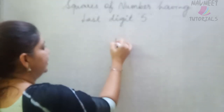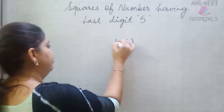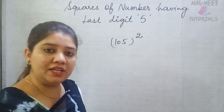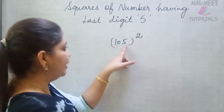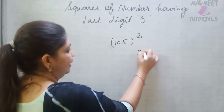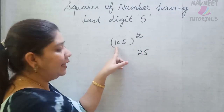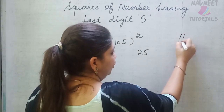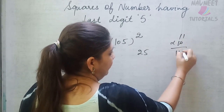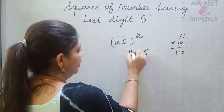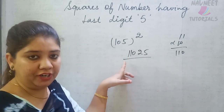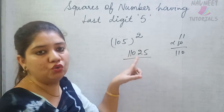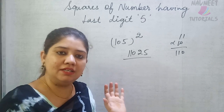Let us consider the number 105 squared. The rule is the same. 5 squared gives 25 at the end. The remaining part is 10, and the next number is 11. So 10 times 11 is 110. Write 110 at the front and you will get 11025 as the answer.